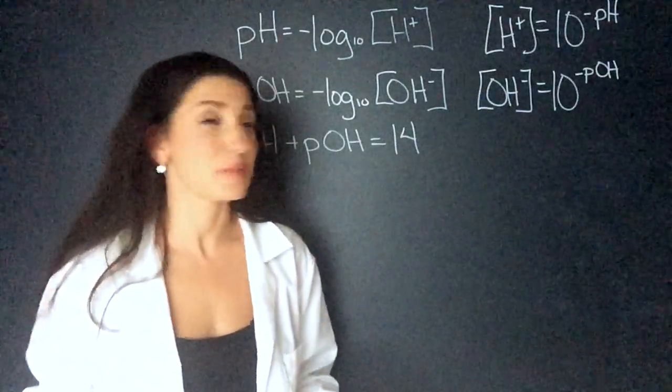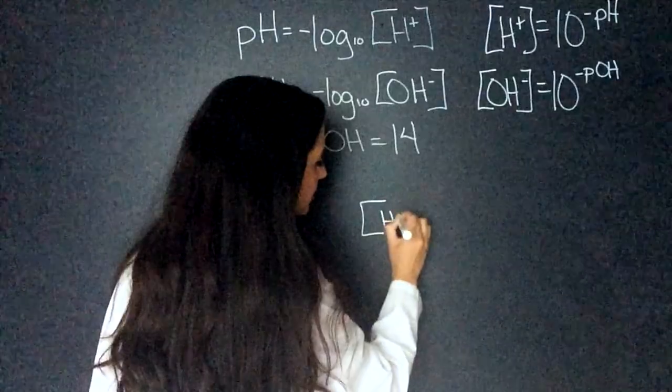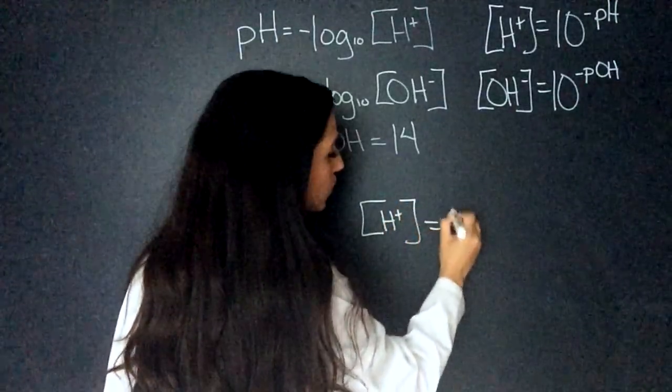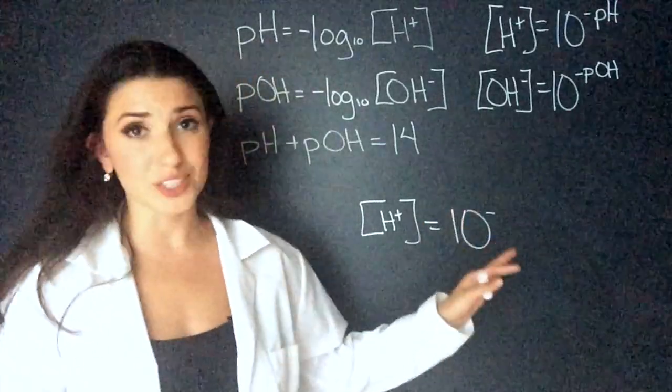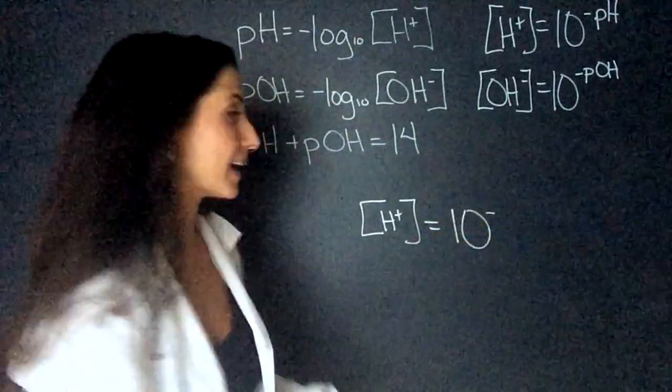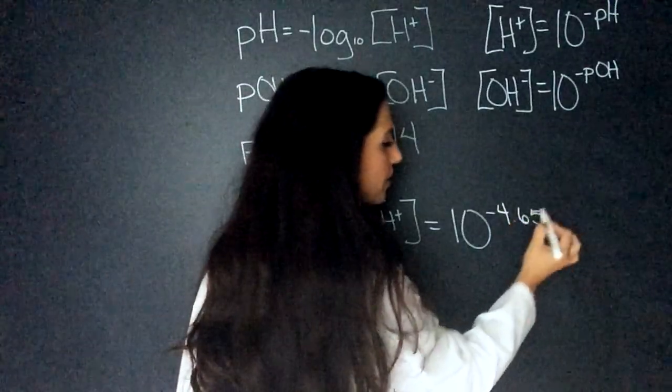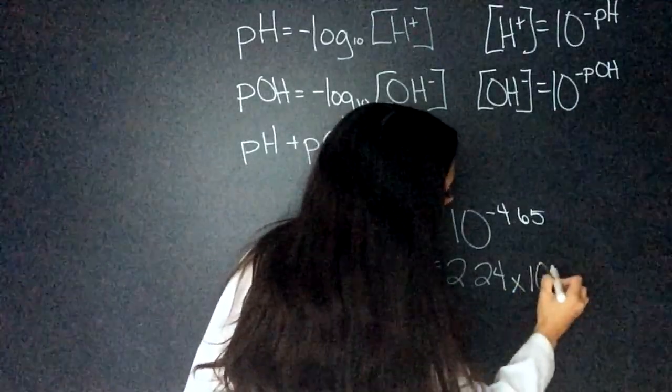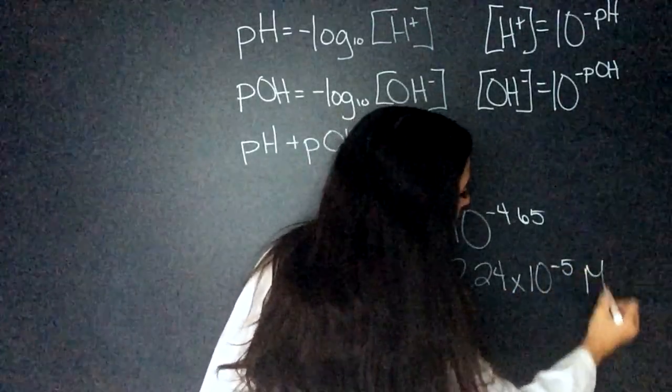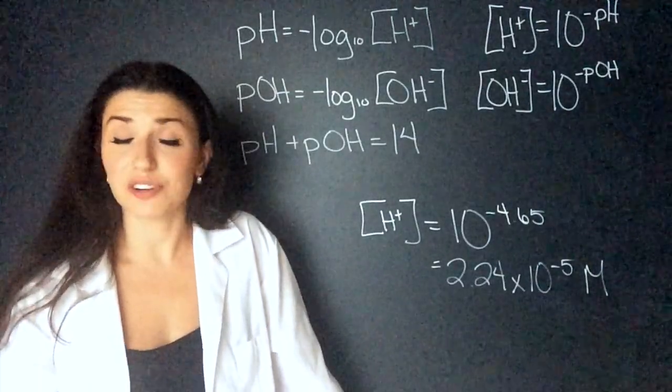This is again a super simple plug it in question. So, the hydrogen concentration is going to equal 10 to the power of the negative pH. And the only trick here is to not forget the negative. So, they told us that the pH was 4.65. This equals 2.24 times 10 to the negative 5 moles per liter. And we're done. So easy.